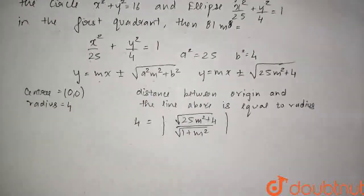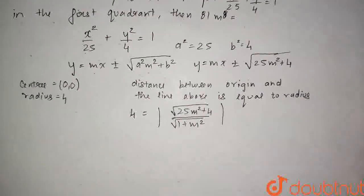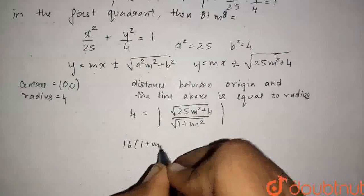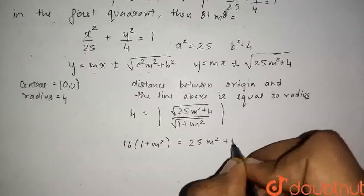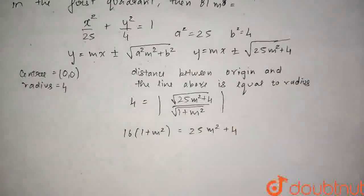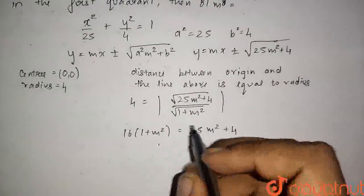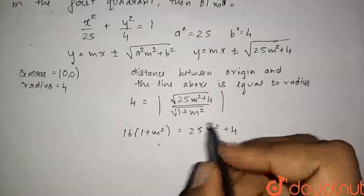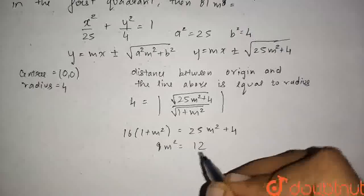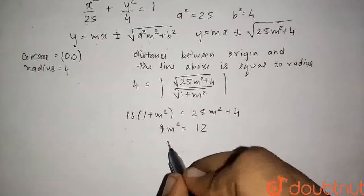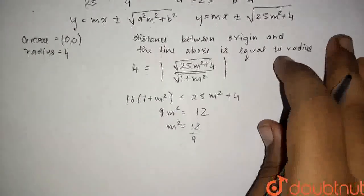Squaring both sides and rearranging, we get 16(1 + m²) = 25m² + 4. Expanding and simplifying: 16 + 16m² = 25m² + 4, which gives 9m² = 12, or m² = 12/9.